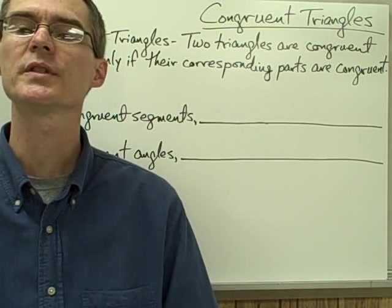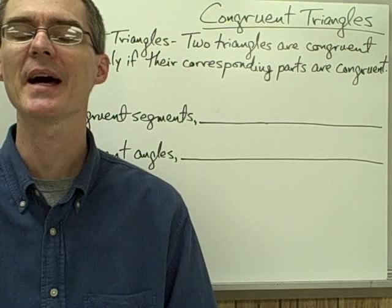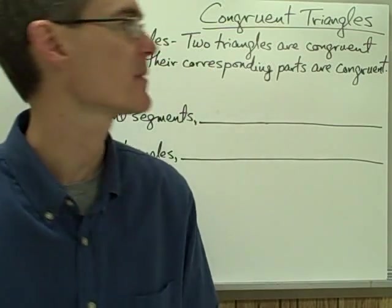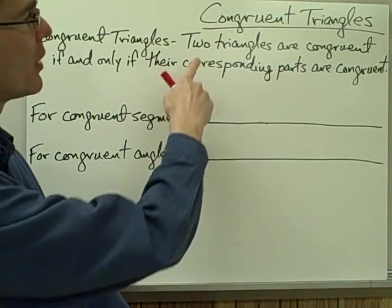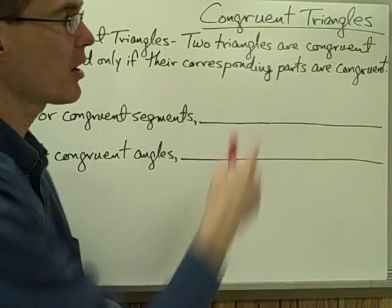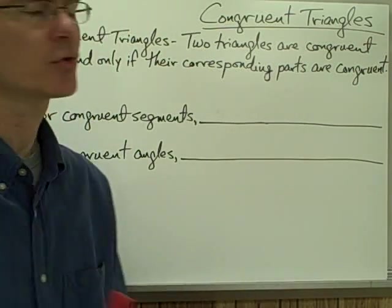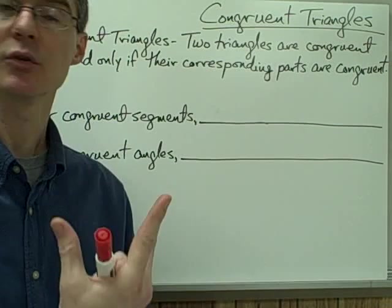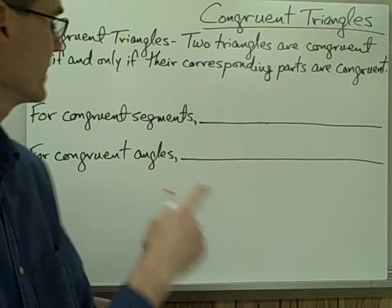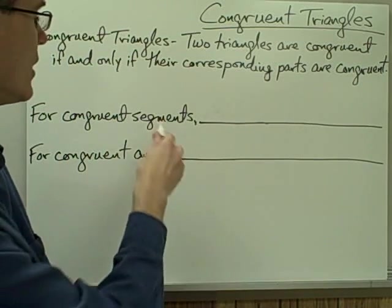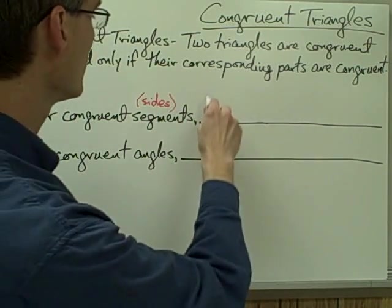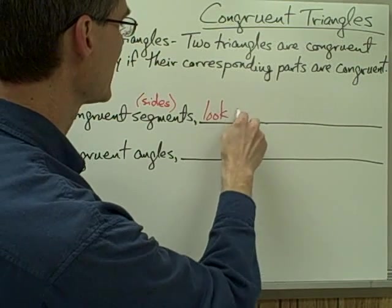In this video we're going to be talking about congruent triangles. We've already talked about how congruent just means same size — two figures or two things that are the same size. When we talk about congruent triangles, we say that two triangles are congruent if and only if their corresponding parts are congruent. When we're trying to identify two triangles as being congruent, we are basically looking for congruent markings. To identify congruent segments, or congruent sides of a triangle, we look for the same hash marks.